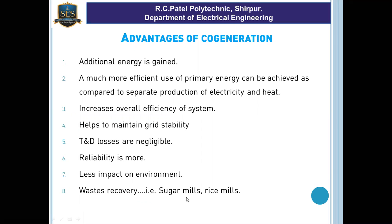Thermal energy waste is what we need to utilize in cogeneration. Sugar mills and rice mills also generate waste heat. We need to utilize it — it is one kind of waste recovery. This is one of the advantages of cogeneration.